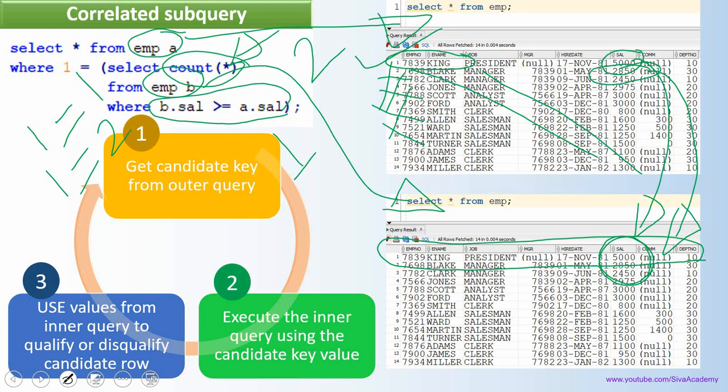That is how a correlated subquery works. I would suggest you take this query, execute it yourself, and compare row by row between the outer query and the inner query — only then will you be able to understand the correlated subquery much better.